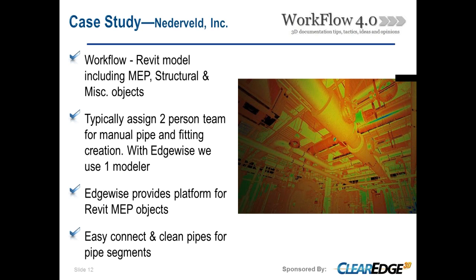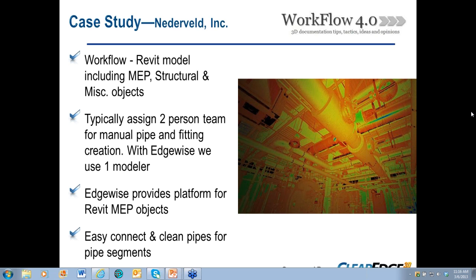Edgewise provides the platform to drive Revit to create elements and as much geometry as we can achieve. A couple of great commands within the software are Easy Connect and Clean Pipes. The Easy Connect option is really slick in terms of adding elbows between pipes, handling changes in diameters, and adding flanges. The Clean Pipes option helps when you deal with conduits — they're never straight, never symmetrical, and they always seem to break up on you. Clean Pipes helps straighten those out and create good alignments.